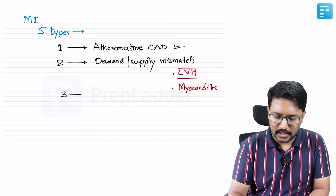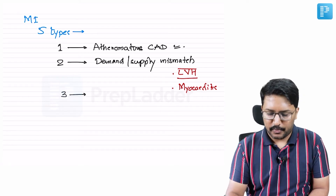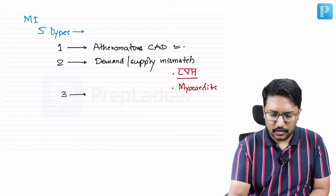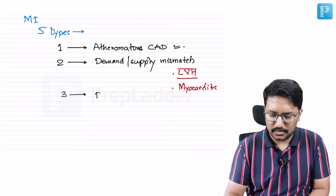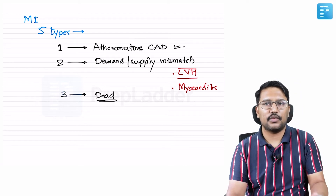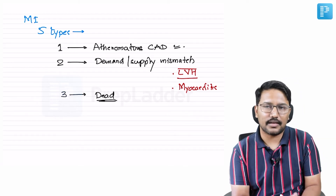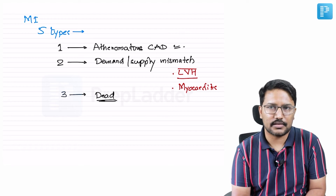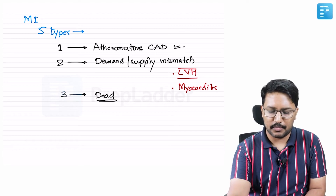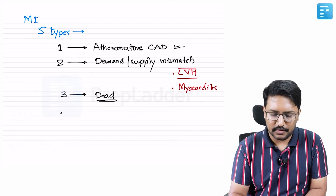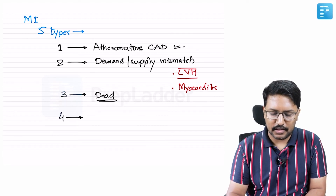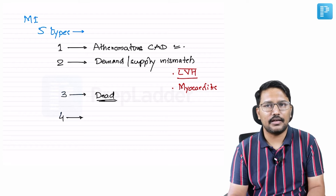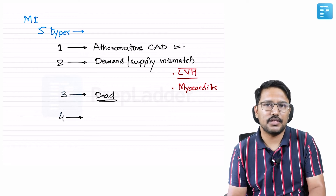Type 3 myocardial infarction is where the patient has died of a suspected MI. The patient is already dead and the circumstances of death suggest it could have been a case of myocardial infarction. In that case, we call it Type 3.